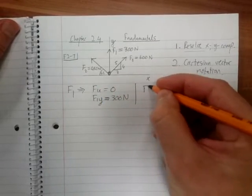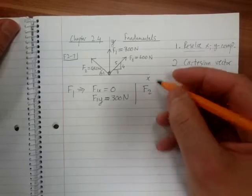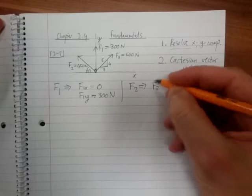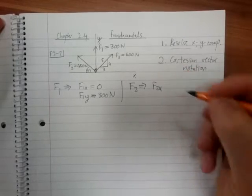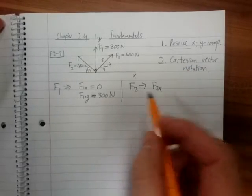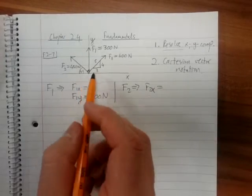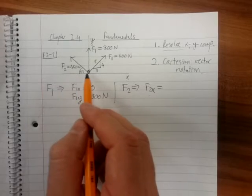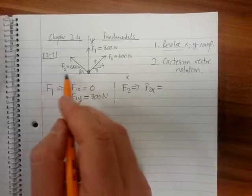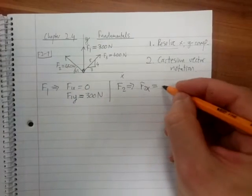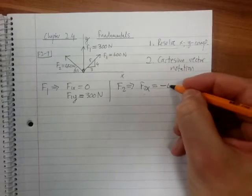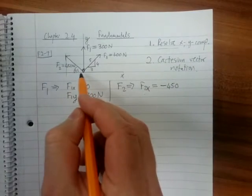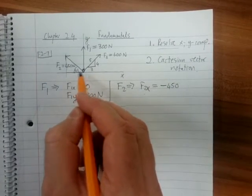Now if we take a look at F2, in the X direction, what do we notice about this force is that the X component is going in the negative X direction, so we know that it will be minus 450.